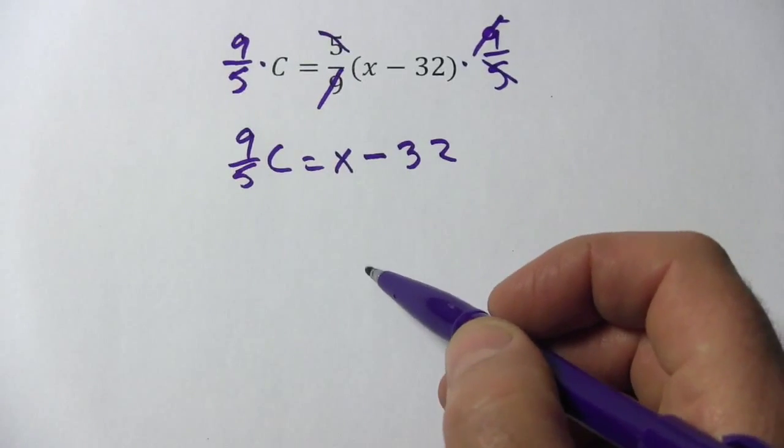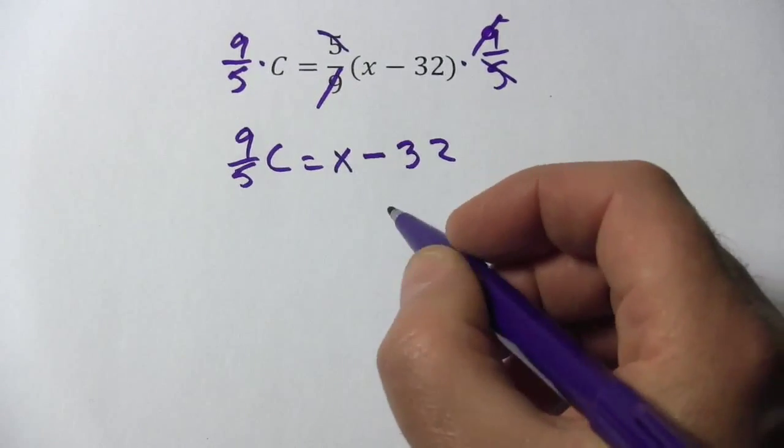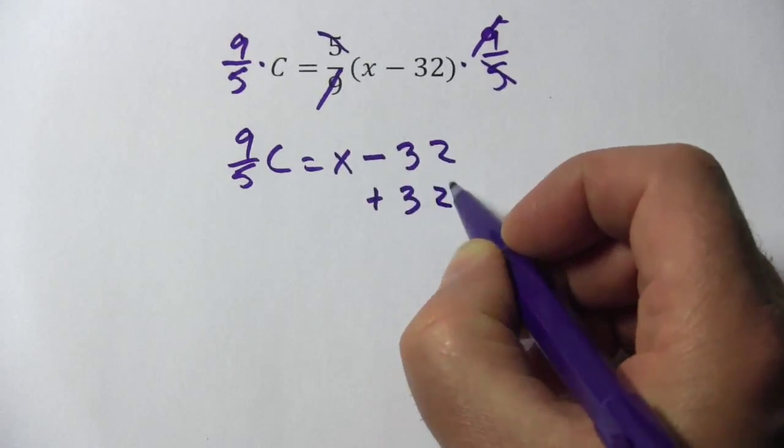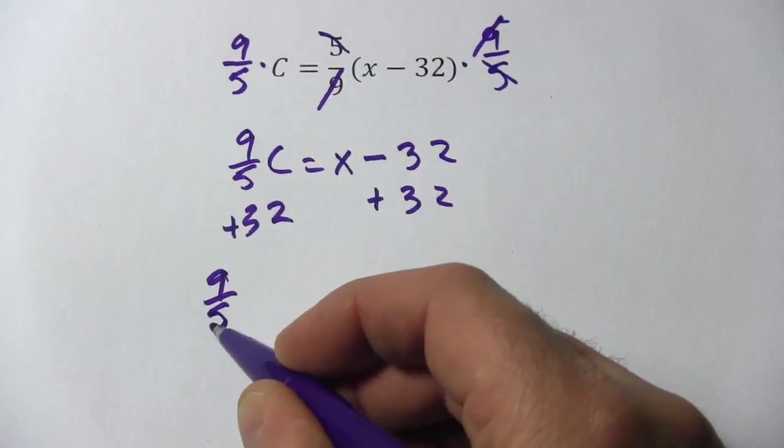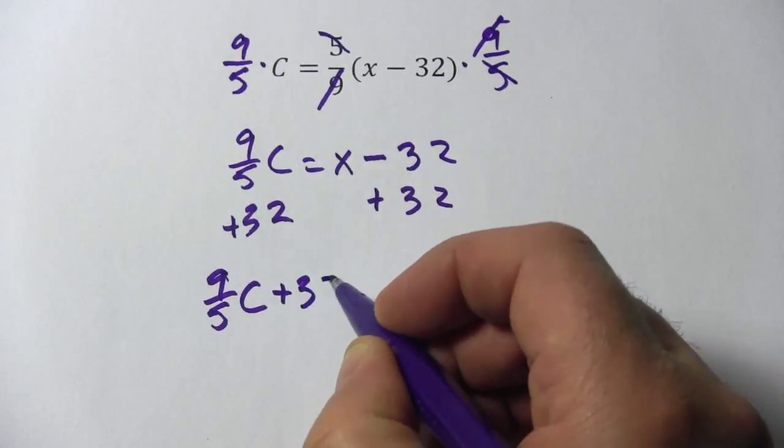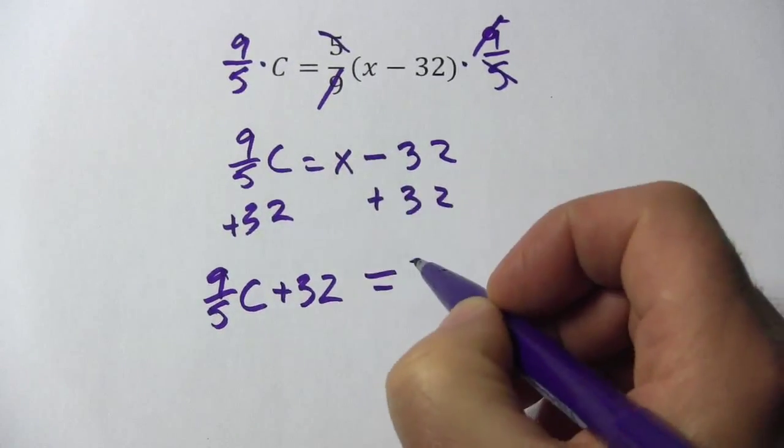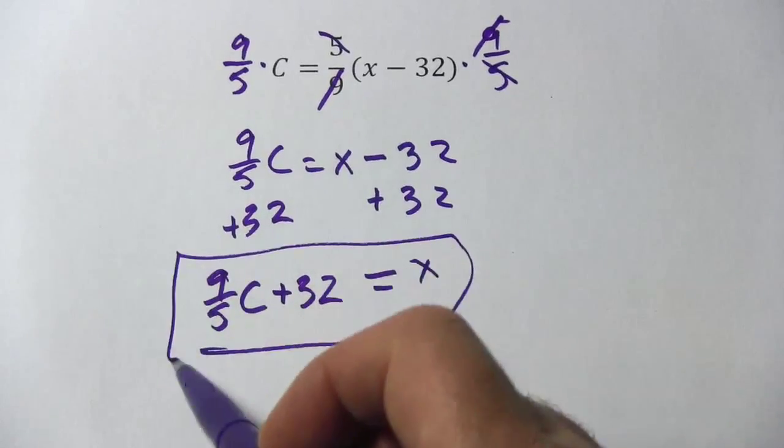Now the next step in getting x alone is just to get rid of this minus 32. We'll do that by adding 32 to both sides. So over here we get 9 fifths c plus 32 equals x, and that is our answer.